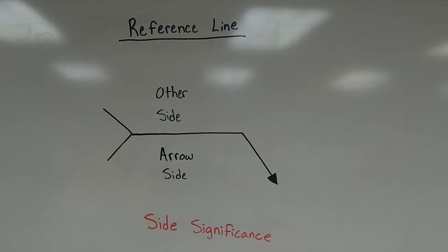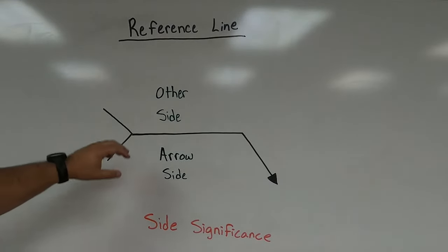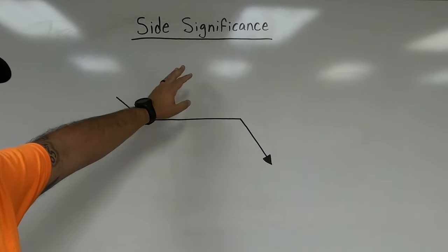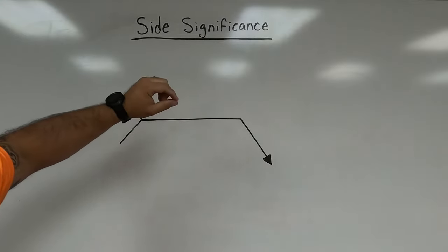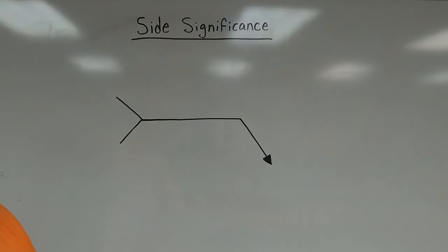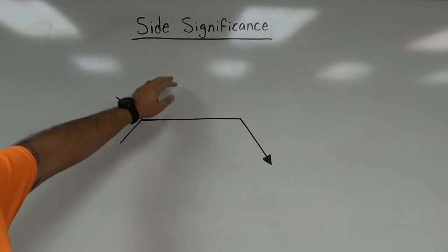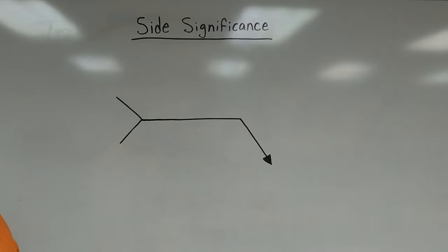Other side and arrow side are a breakdown of what's called side significance. Depending on which side the information is drawn on, that's going to tell us something unique about the weld to be made. To help understand side significance, I want to introduce the first weld symbol we're going to discuss — it will help us better understand how arrow side and other side work.